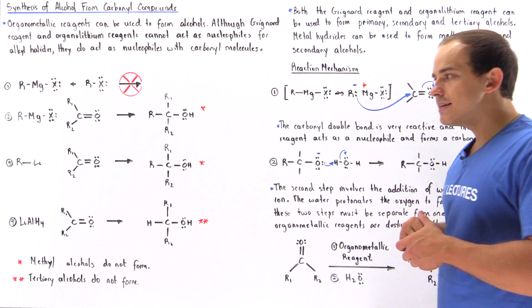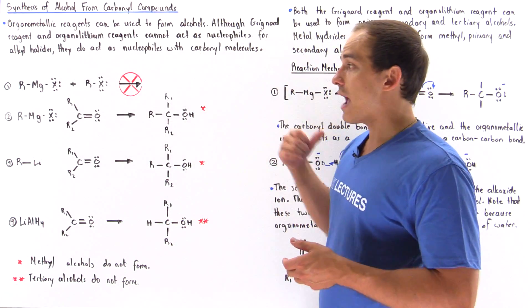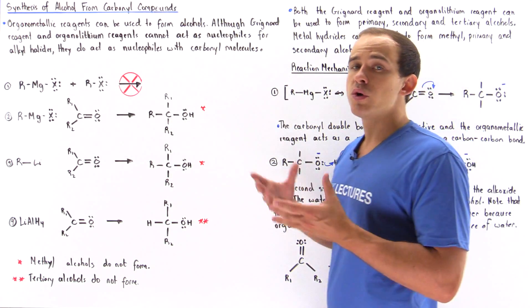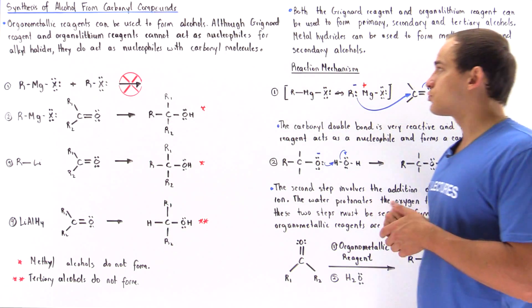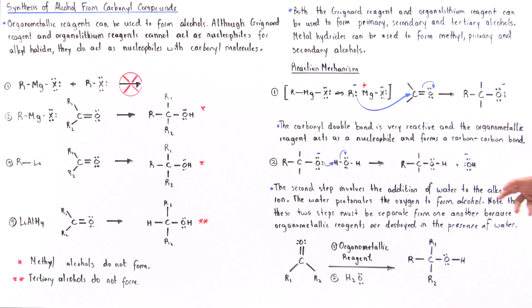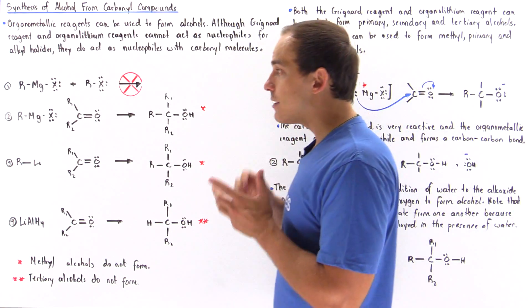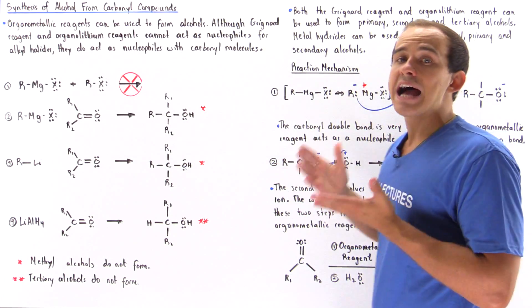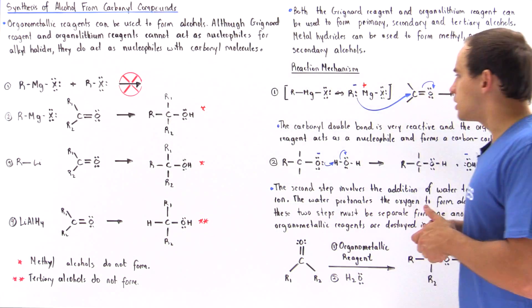Now what exactly is the reaction mechanism by which we synthesize our alcohol products by mixing carbonyl molecules with our organometallic reagents and our metal hydride? It's basically a two-step mechanism. And the important part about this mechanism is that these two steps have to be separated from one another, and we'll see why in just a moment.